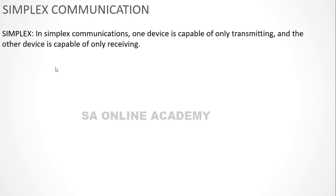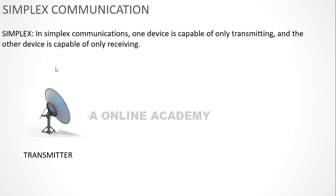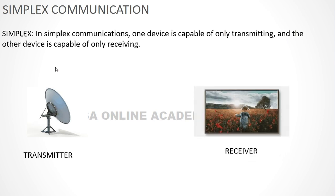Simplex communication is one where a single device is capable of only transmitting or only receiving — not both. The very good example of simplex communication is FM radios. The radio servers are able to transmit only, and our devices installed in computers, laptops, handsets, or cars are capable of receiving only. You cannot transmit. So FM radios are the best example of simplex communication — it's a one-way transmission only.